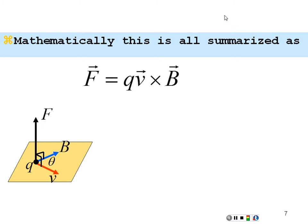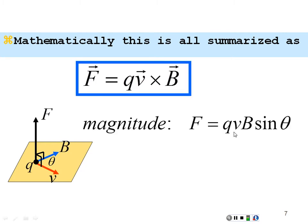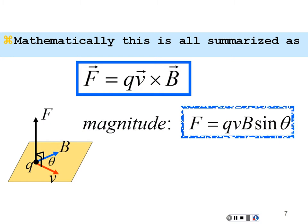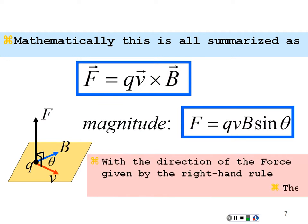Mathematically, we summarize this as a cross product: the force on a charge moving in a magnetic field equals the charge times the velocity crossed with the magnetic field, F = q(v × B). The magnitude is |q||v||B| sin θ, where θ is the angle between the velocity and the magnetic field vectors. The direction is given by the right-hand rule: point fingers in the direction of velocity, close toward the magnetic field, and the thumb points in the direction of the force.